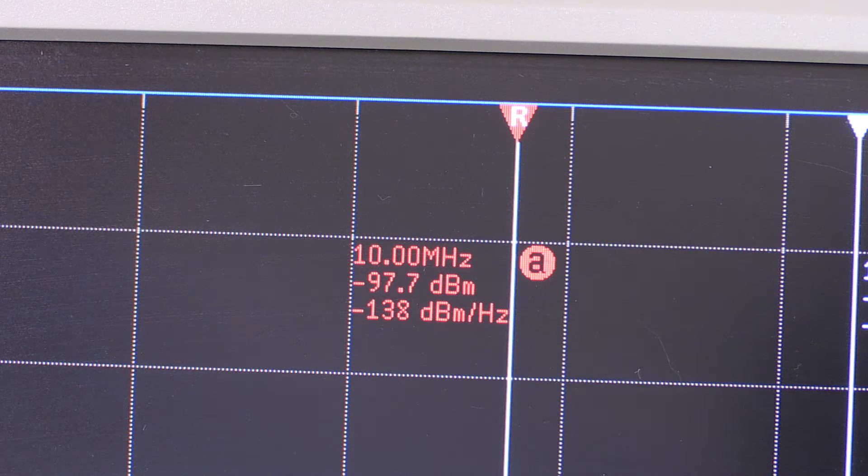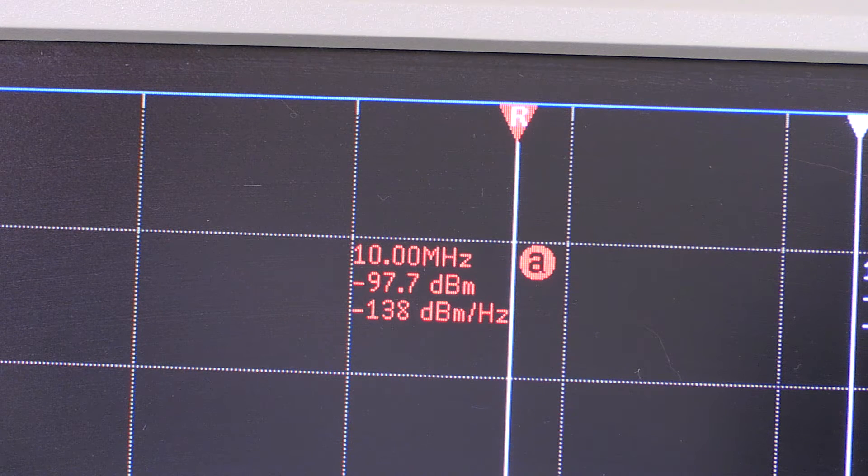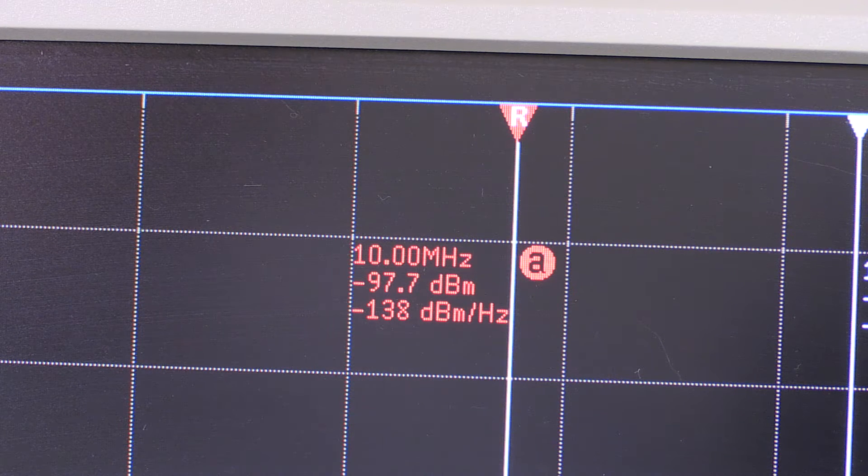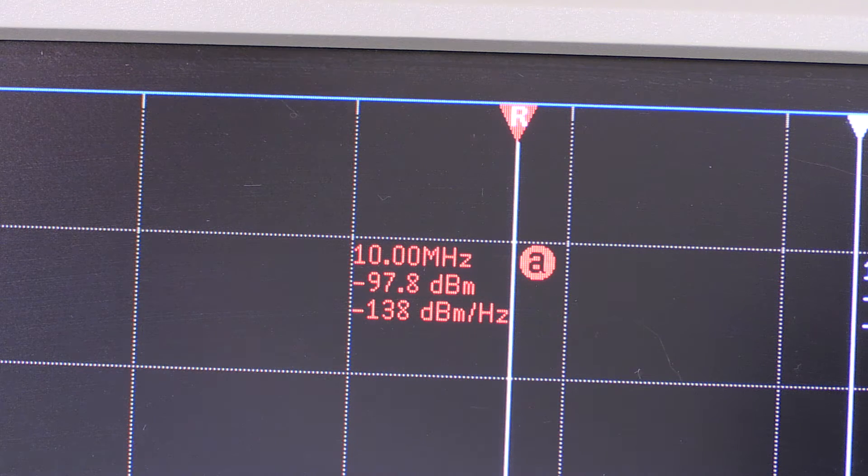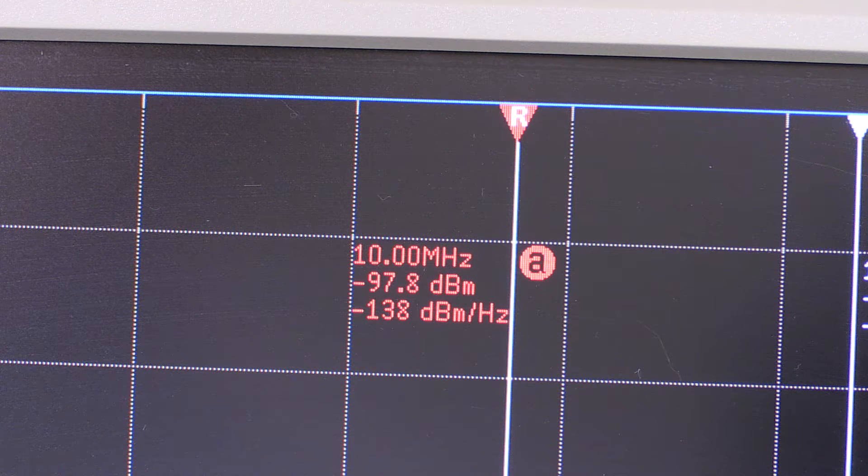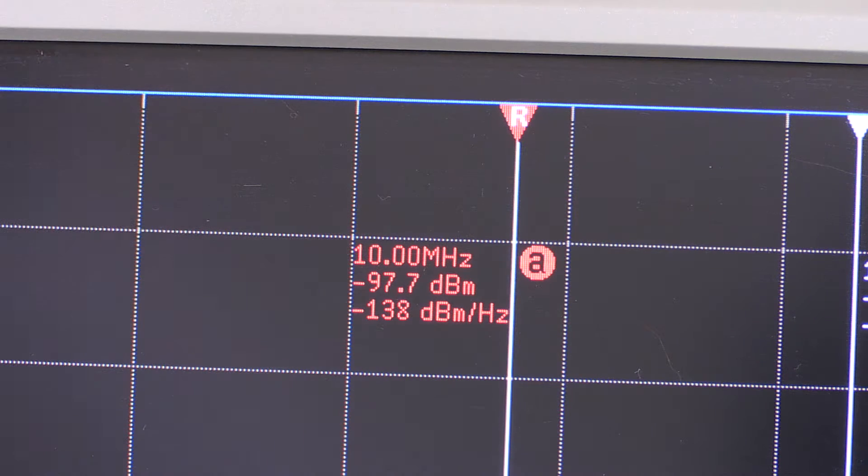We see that the output level out of the amplifier—the amplifier is powered up, the noise source is not—we get negative 97.7 dBm. The last digit jumps up and down, but let's call this 97.7 dBm. That's the first number we need. Now let's turn on the noise source.